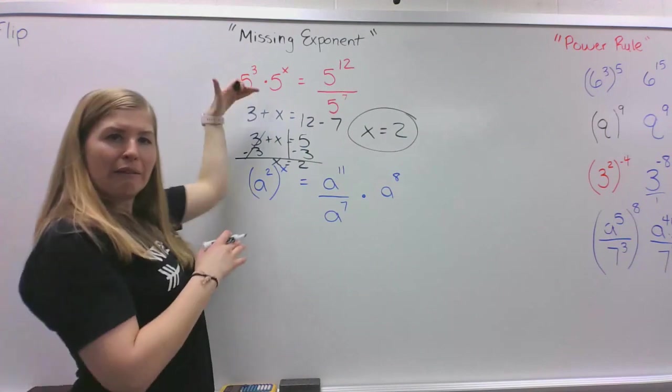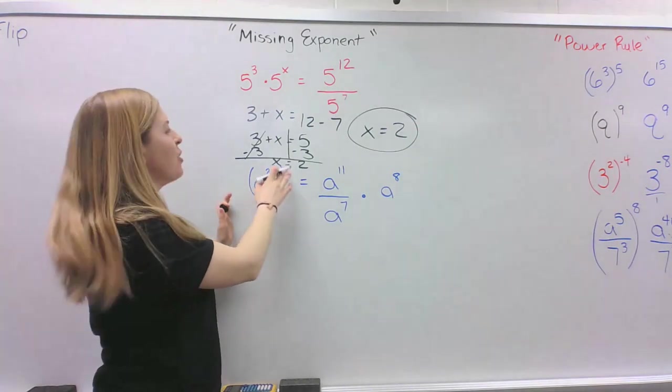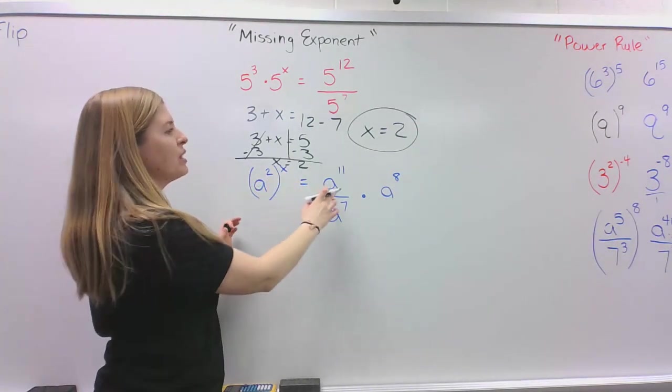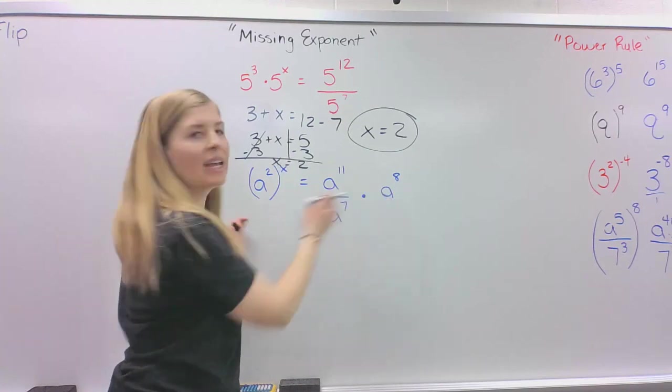Let's try this next one. I know this one kind of crunched in, but we have a to the second power, a squared, raised to the x power equals a to the 11th power divided by a to the 7th times a to the 8th.